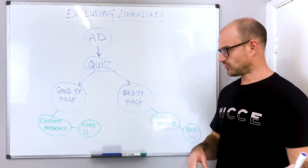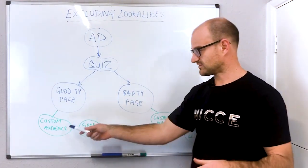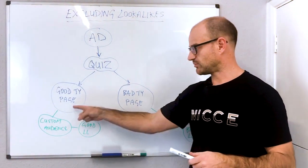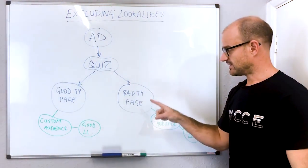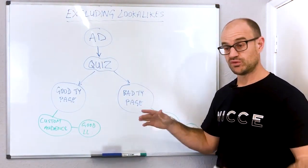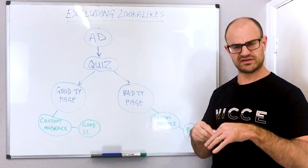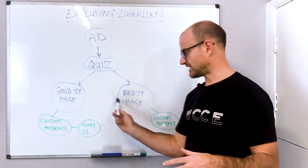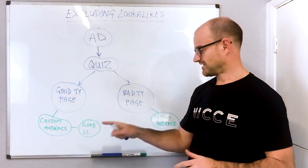You then create a custom audience of those people hitting the good thank-you page and a custom audience of the bad thank-you page. When you build that audience up to a certain level - I think it's around 300 visits to those particular pages - you can then create a good look-alike audience and a bad look-alike audience.